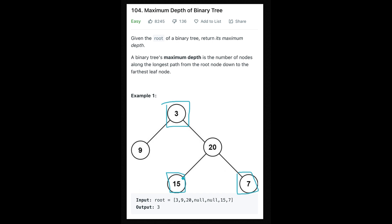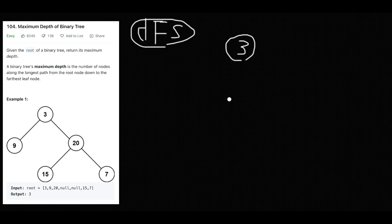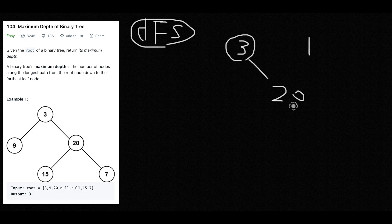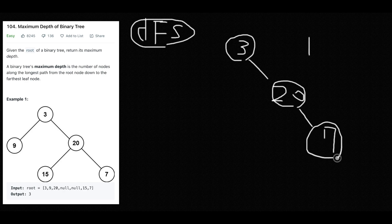We can solve this question with depth-first search and breadth-first search — I'll show you two ways. Let me explain depth-first search first by breaking the question into small parts. If you are given only a single node, the maximum depth is obviously 1. If you add one more level, it's obviously 2. With another level, it's obviously 3.